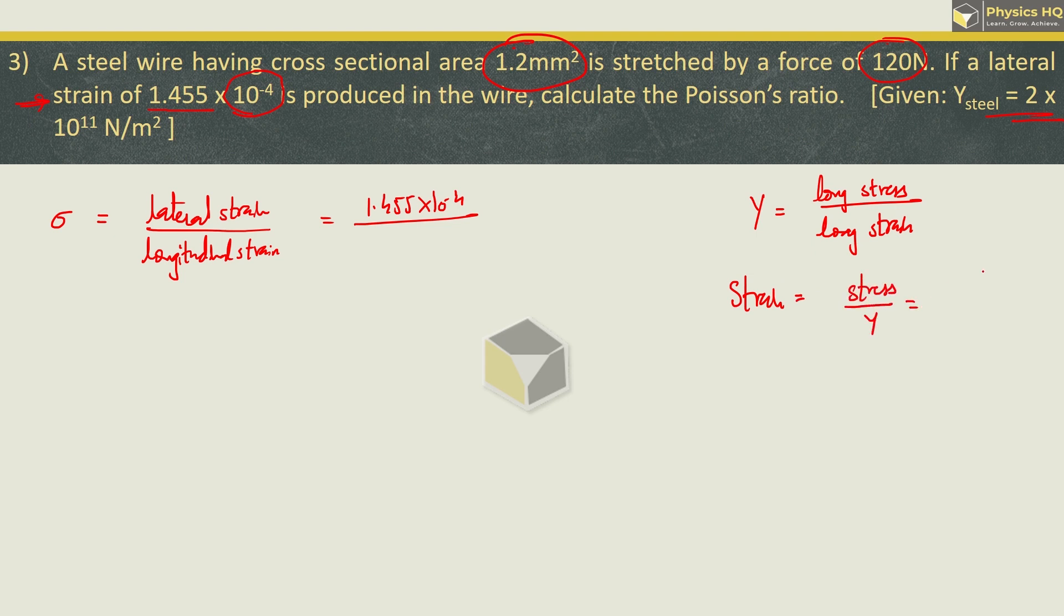This equals stress upon Young's modulus. What is stress formula? Force upon area. So this is force / area × Young's modulus. Force is 120 N. Area is 1.2 mm², millimeter is 10^-3, but squared is 10^-6, so 1.2 × 10^-6, times Young's modulus 2 × 10^11.